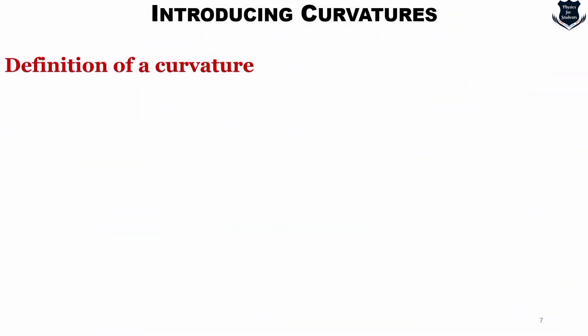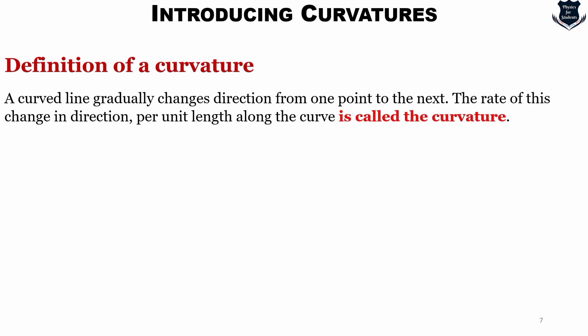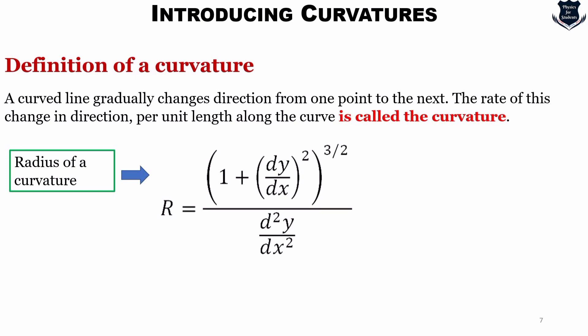Here is a definition of a curvature. A curved line gradually changes the direction from one point to the next. The rate of this change in direction per unit length along the curve is called the curvature. So we will just show you what is the equation for the radius of a curvature. This is a standard way in which we measure the radius of a curvature.